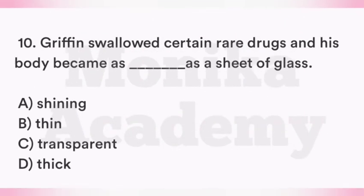Question 10: Griffin swallowed certain rare drugs and his body became as ___ as a sheet of glass. Option A: Shining. Option B: Thin. Option C: Transparent. Option D: Thick. The correct answer is Option C, Transparent. Griffin swallowed certain rare drugs and his body became as transparent as a sheet of glass — उसकी body बिल्कुल transparent हो गई थी जैसे glass की sheet होती है.